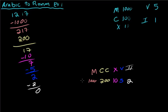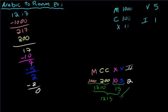1,000 plus 200 is 1,200. 10 plus 5 is 15. So 1,200 plus 15 is 1,215. And if I add two more onto that I get 1,217, which is what I wanted. So it looks like everything's right — that's equal to MCCXVII, 1217, and everything is done.